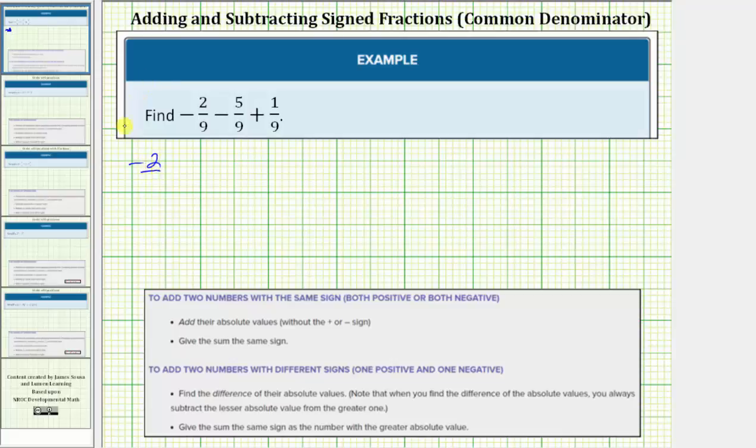We want to determine negative two-ninths minus five-ninths plus one-ninth. The first thing we should recognize is that we're adding and subtracting fractions that have a common denominator of nine, and therefore the result will also have a denominator of nine.